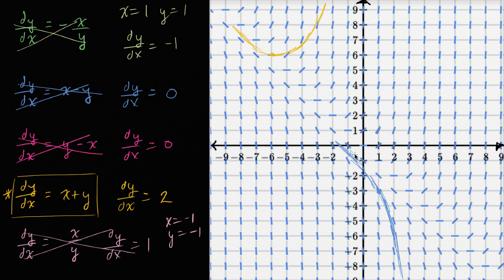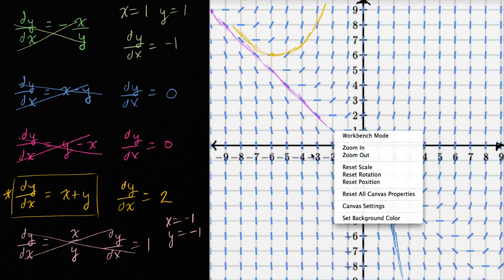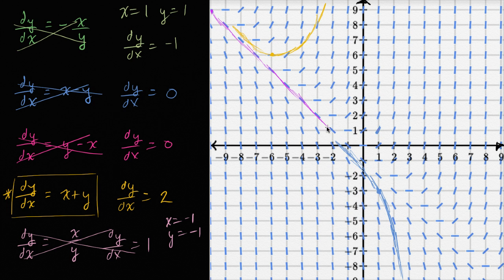Actually, this is the line y equals negative x minus one. And it looks like if the solution contained that point, that would actually be a solution to the differential equation — y is equal to negative x minus one. And you can verify that: if y equals negative x minus one, then x and negative x cancel out and you're just left with dy/dx equal to negative one, which is exactly what's being described by this slope field.